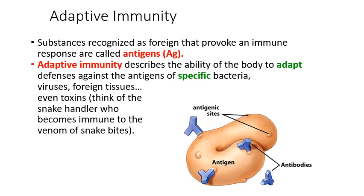All of this adaptive immunity is based on cell surface receptors — molecular patterns on the surface of potential pathogens and molecular patterns on the surface of your own cells. Your immune system is looking for antigens. Antigens are any molecule that your immune system can recognize as foreign and that can provoke an immune response. Antigens are highly specific — antigens associated with one type of bacteria are going to be different molecular shapes than antigens associated with another type of bacteria, virus, or protozoan.